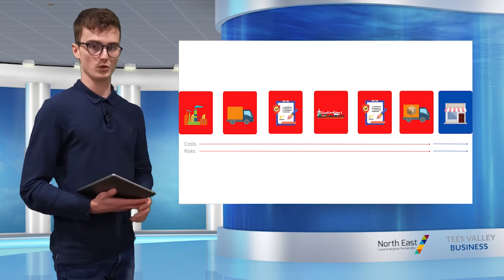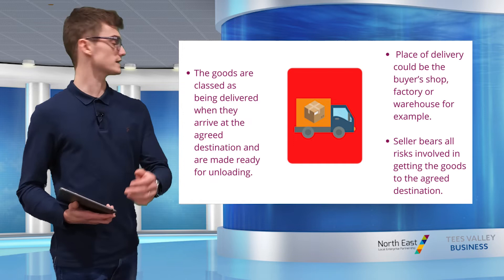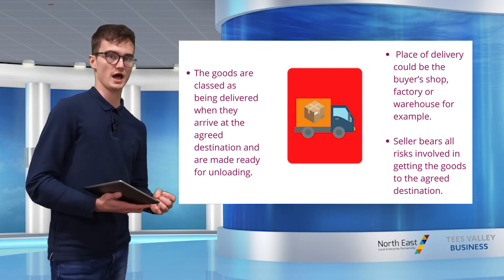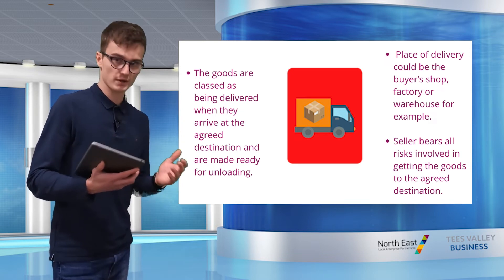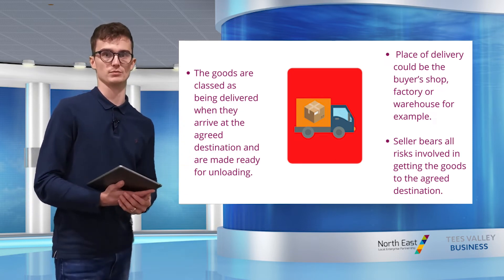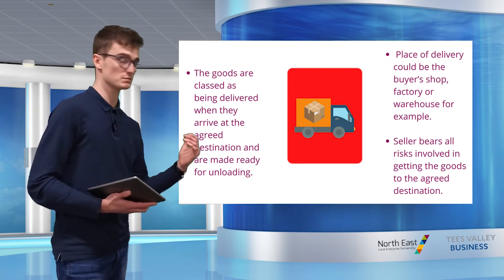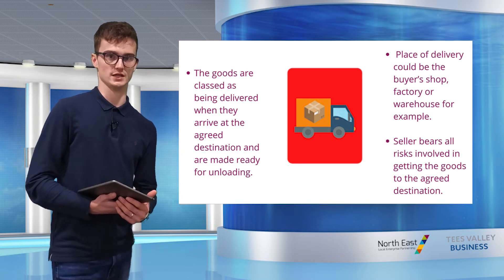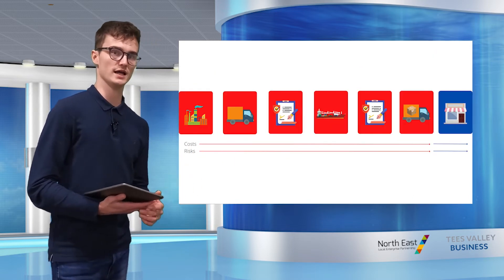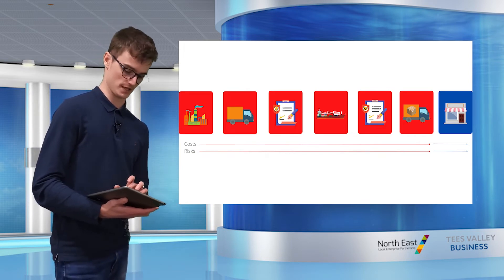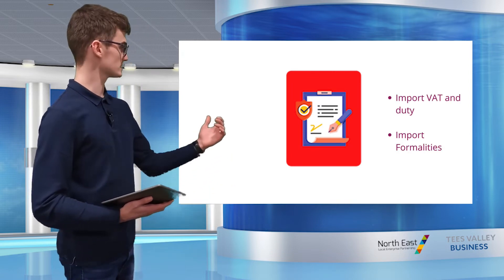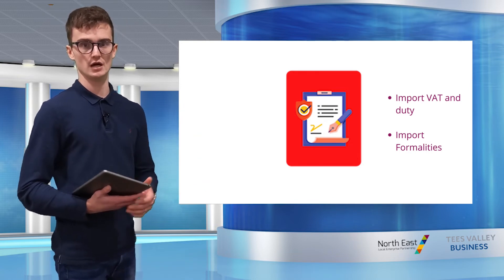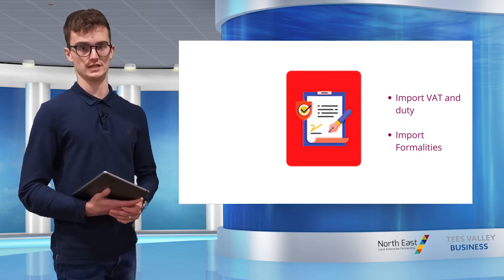The first thing to highlight under DDP is the delivery point. The goods are classed as delivered when they arrive at the agreed destination and are made ready for unloading — that could be the buyer's shop, factory or warehouse. The goods are the responsibility of the seller until this point, and the seller bears all risks involved in getting the goods to the agreed destination. Arguably the most important part of DDP is the import formalities — these responsibilities belong to the seller, including payment of import VAT and duty, plus the administrative burden and costs of completing the import formalities.